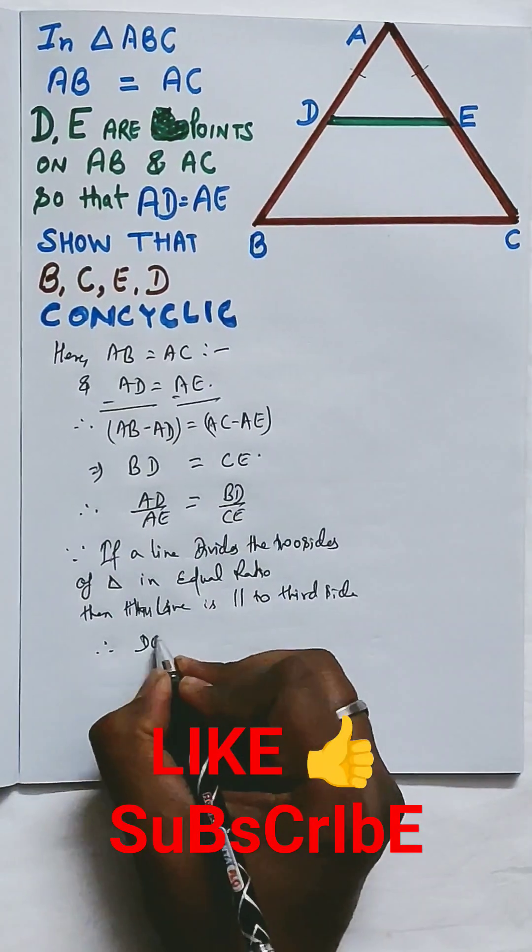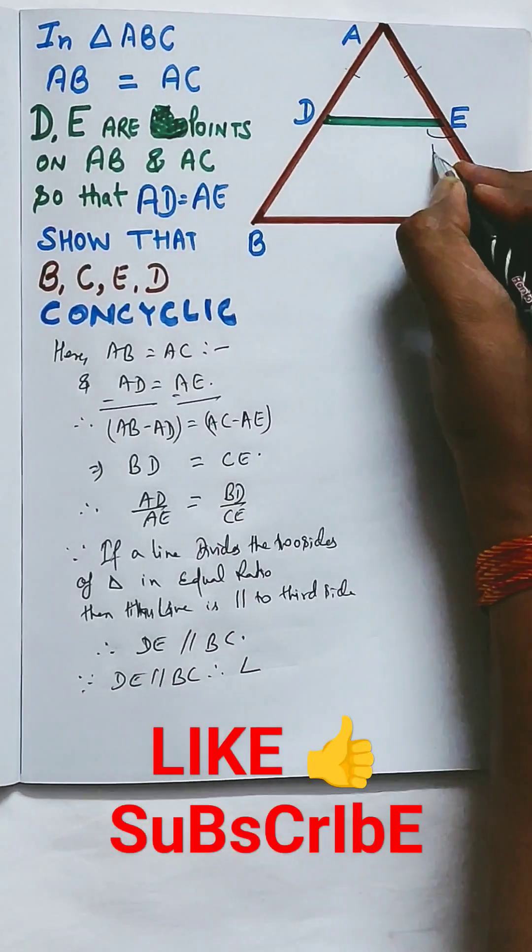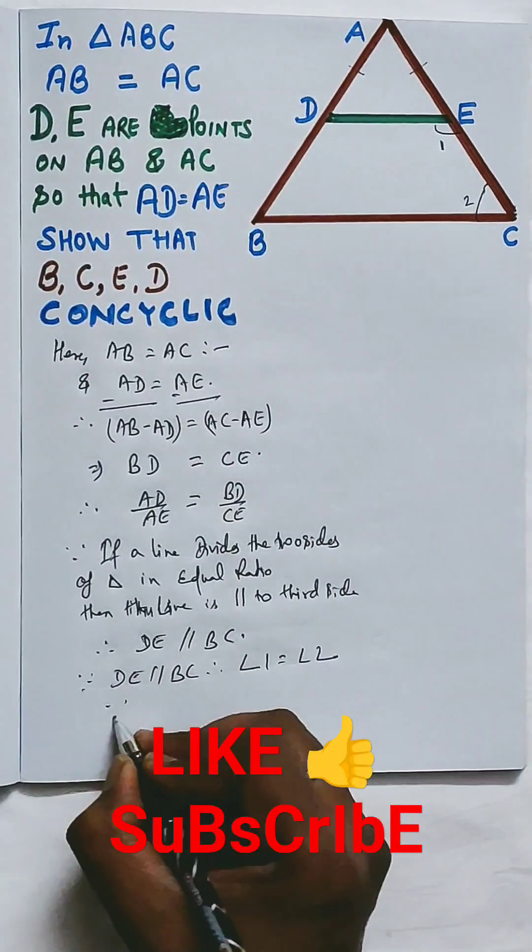This is the converse of Thales theorem, right, so we can say DE is parallel to BC.